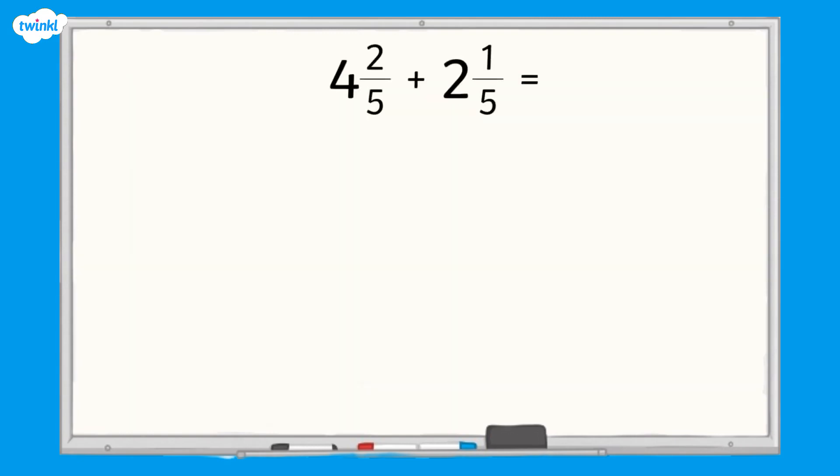Let's have a look at a calculation together. Four and two-fifths add two and one-fifths. We can partition each mixed number so that we can add the whole number parts together, add the fraction parts together and then recombine to get the total answer. So first we partition the mixed numbers.